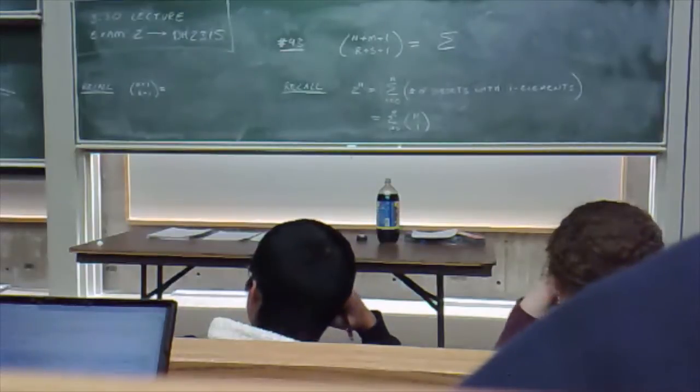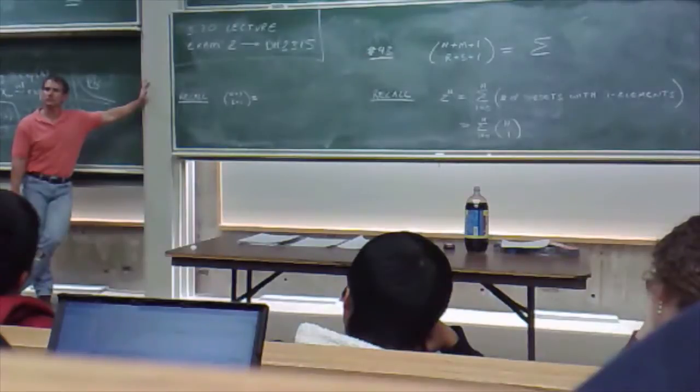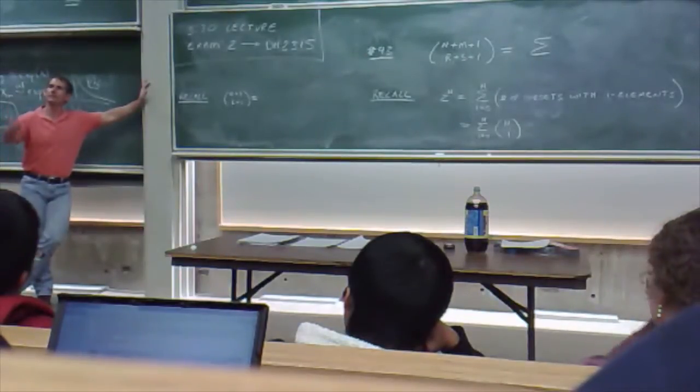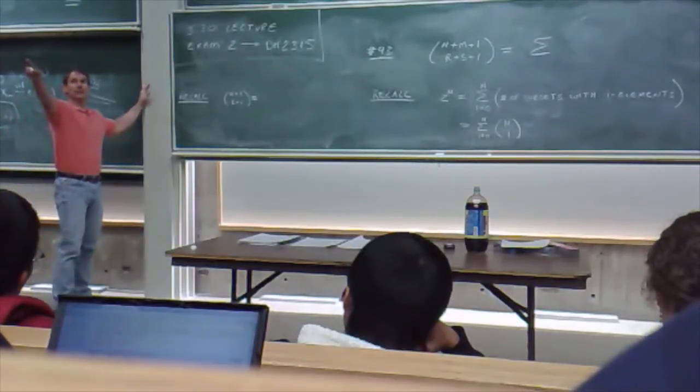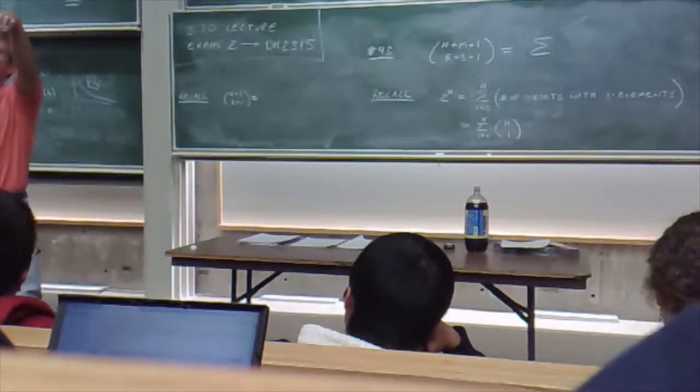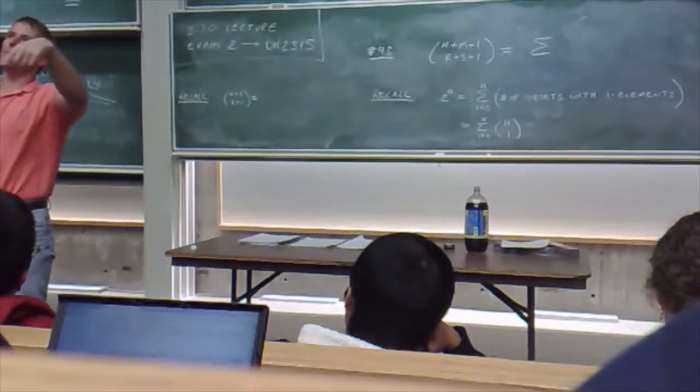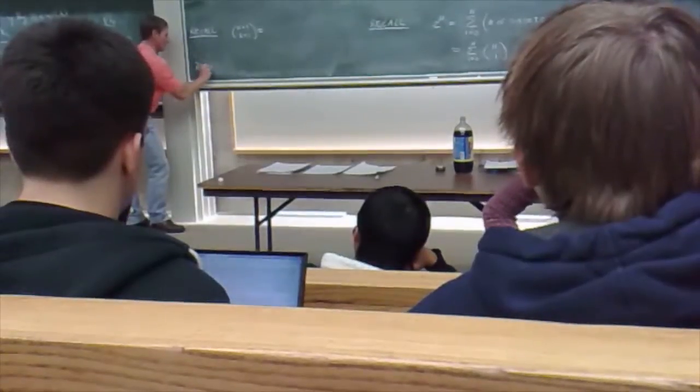Well, what were you partitioning, folks? What were you partitioning? Go ahead. The number of subsets which had the last element and the number of subsets which didn't have the last element. Wait. So he's referring to an identity where you partition a set of subsets, depending upon whether or not the subsets contain or don't contain a given element, correct? Yeah. That gives you a different identity.